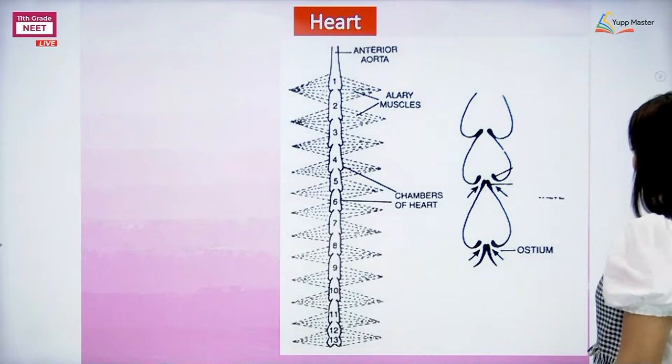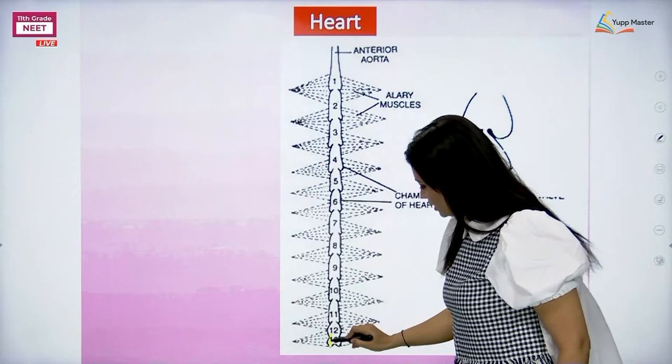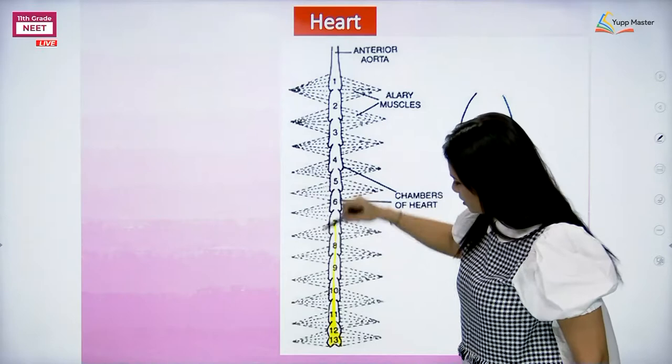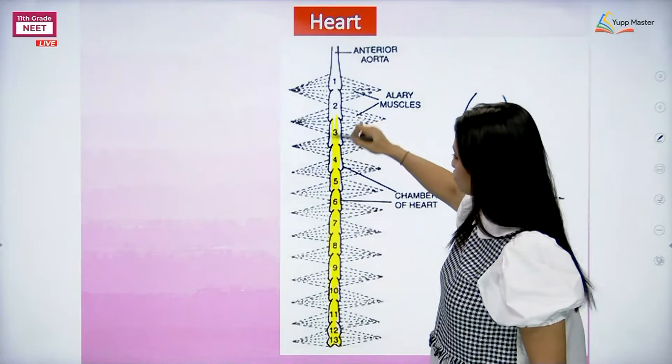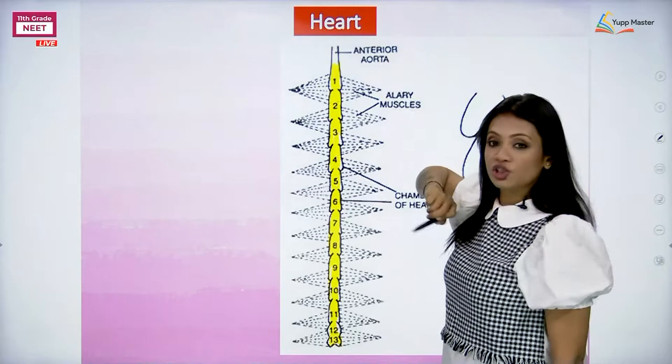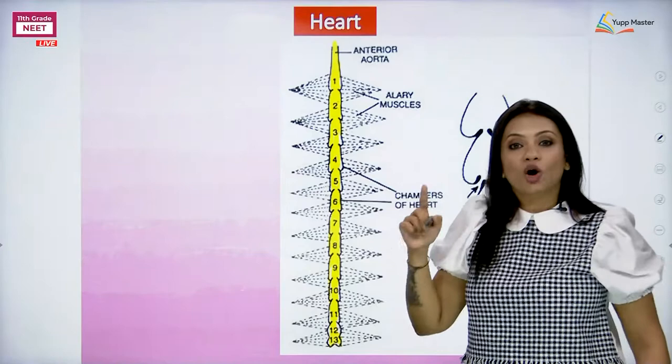Over here you can see how the chambers are from the 13th chamber all the way up. Blood, whenever the heart contracts, flows exactly in this direction right from the posterior till the anterior-most chamber. Blood goes all the way up till the first chamber and after the first chamber it enters the aorta. The aorta opens at the region of the head.